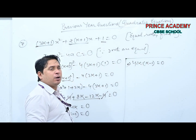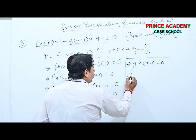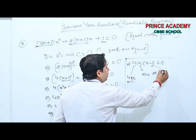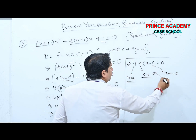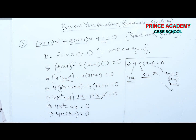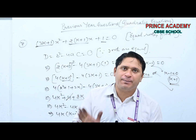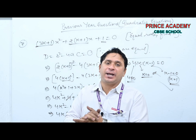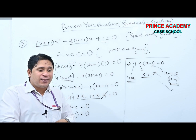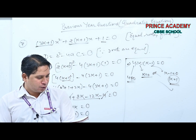Since 4 ≠ 0, either K = 0 or K = 1. The non-zero value of K is 1. All three questions (5, 6, 7) were of the same type — discriminant = 0 when roots are equal — and are frequently asked by CBSE.